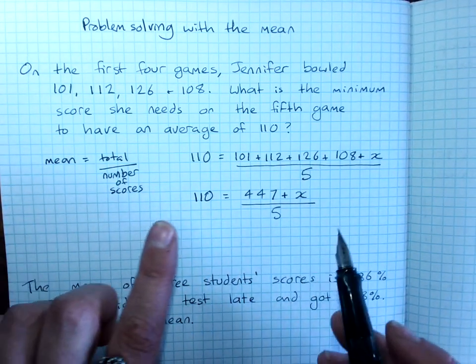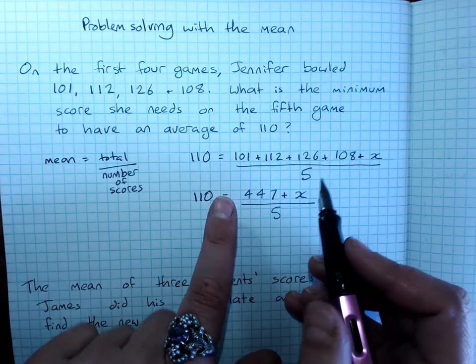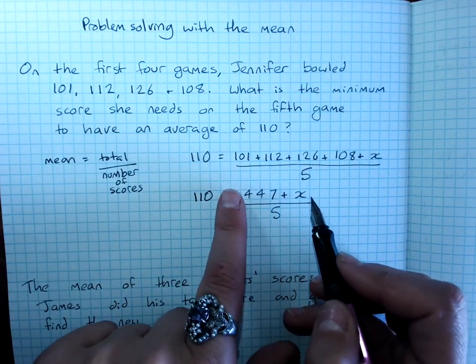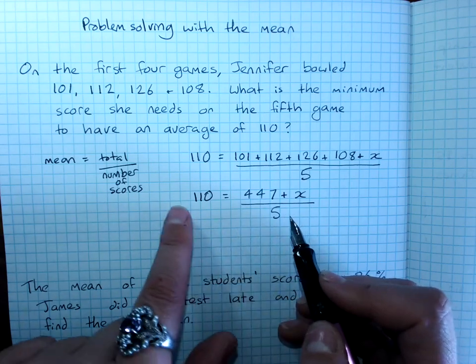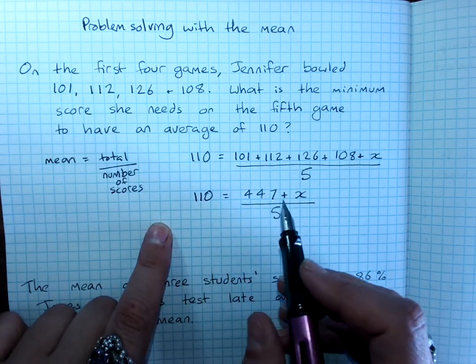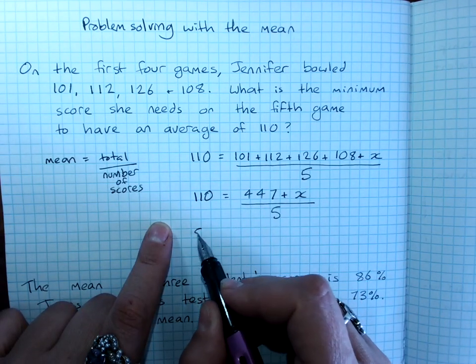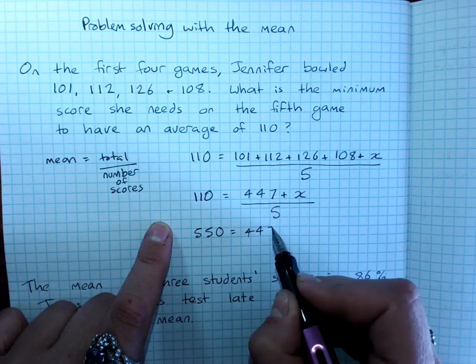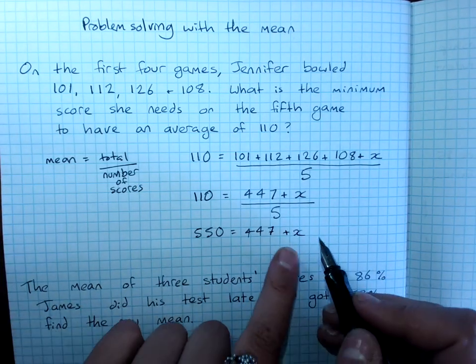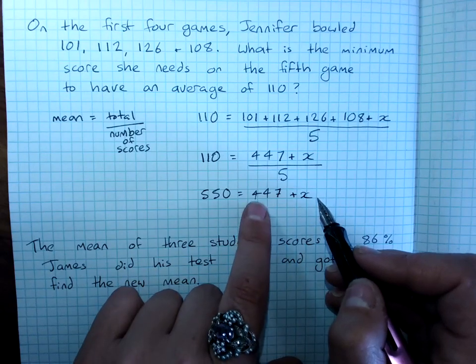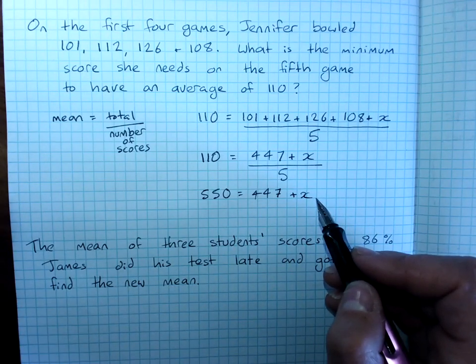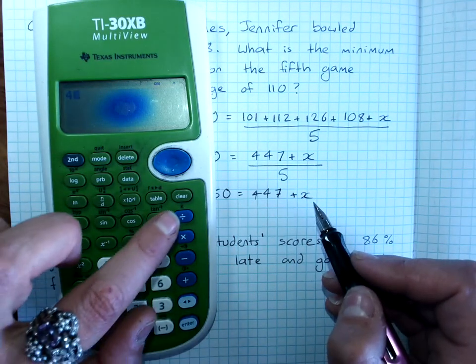So, we want to get X on its own. We've got to multiply both sides by 5. So, 5 times 110 is 550 equals 447 plus X. And to get X on its own, I'm going to take away 447 from 550.